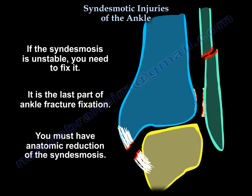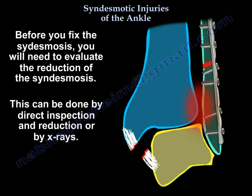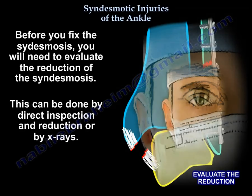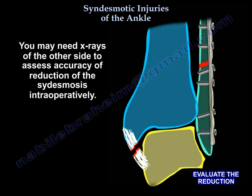If the syndesmosis is unstable, you need to fix it — it is the last part of ankle fracture fixation. You must have an anatomic reduction of the syndesmosis. Before you fix the syndesmosis, you will need to evaluate the reduction, which can be done by direct inspection and reduction or by x-rays. You may need x-rays of the other side to assess accuracy of reduction of the syndesmosis intraoperatively.